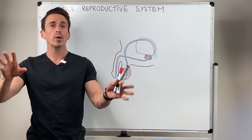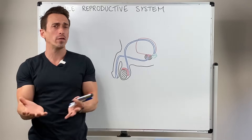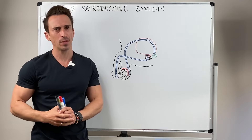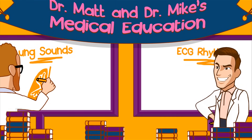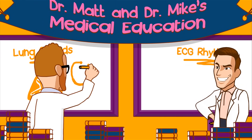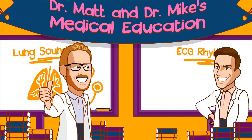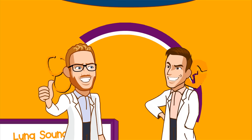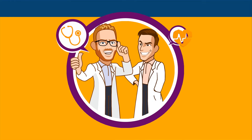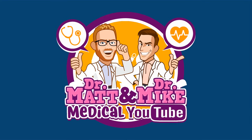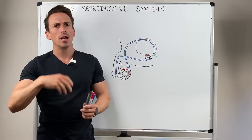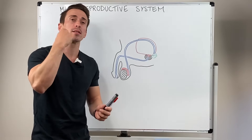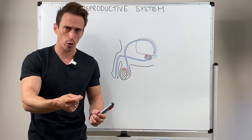Hi everyone, Dr. Mike here. In this video we're going to go through an overview of the male reproductive system. The purpose of the male reproductive system is to produce and supply sperm.